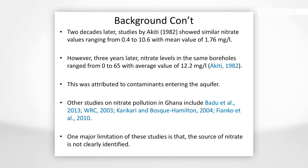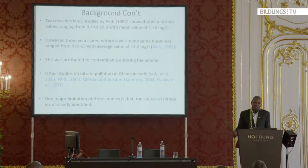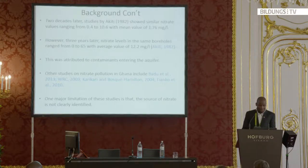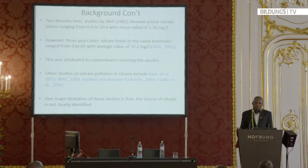Two decades later, Akiti did similar work in the same boreholes, but this time he found some boreholes with higher levels of nitrate contamination, up to about 12.2 milligrams per liter. He attributed this to a wide range of sources: human excreta, chemical fertilizer, and indiscriminate disposal of waste. Other studies of nitrate pollution in Ghana include work by Caricari and Fianco et al. However, all these studies did not try to identify the origin of the nitrate, making policy and management options very difficult.